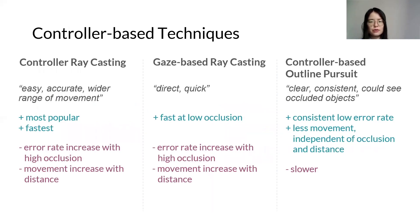Controller-based raycasting proved to be very fast and the most popular selection technique. However, users were less accurate with highly occluded targets and required more movement as the target distance increased. Gaze-based raycasting was similar but deteriorated much more at high occlusion due to eye tracker imprecision and the limited range of movement of the head relative to the hands. In contrast, controller-based outline pursuits achieved consistently low error rates across all conditions. It also required less movement from the participant, independent of the level of occlusion or distance to the target. Preference-wise, users felt there was little difference between raycasting and outline pursuits techniques. However, many favored raycasting because of the fast selection times at low occlusion.